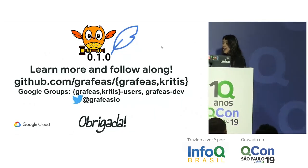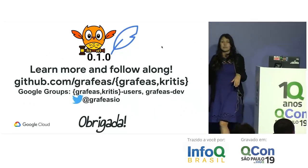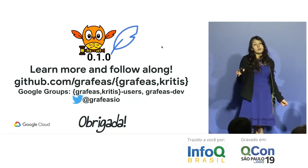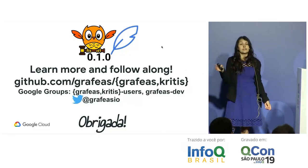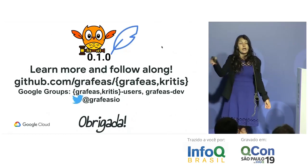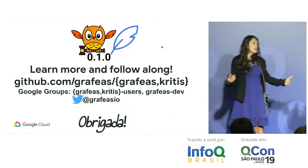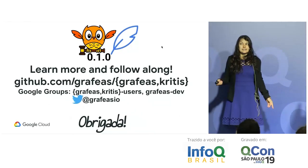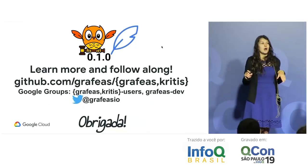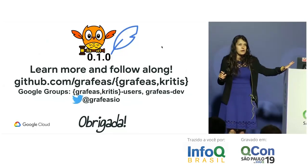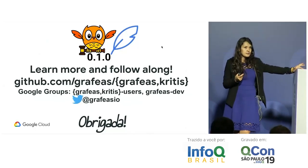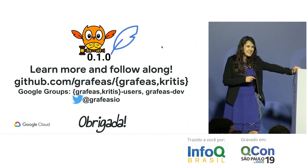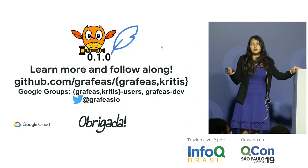To learn more: check the GitHub repositories for Grafeas and Kritis, join the Grafeas users and Grafeas dev Google groups where we hold community meetings to discuss future releases and prioritization, and follow us on Twitter at grafeas.io. A few hands went up for potential use of Grafeas and Kritis, and a couple for contributing — all contributions are very welcome.